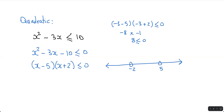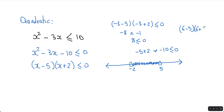Let's take another number in the other segment, between negative 2 and 5. The best number to test here is 0 because it's easiest to work with. If you put 0 in for x, you just end up with negative 5 times 2, which gives you negative 10 — which definitely is less than or equal to 0. So since it's true, you shade in here. Let's take 6 in the last segment: 6 minus 5 times 6 plus 2 — that's 1 times 8, which is 8. Is that less than or equal to 0? Definitely not, so it's false and we don't shade in there.